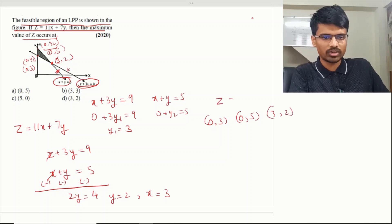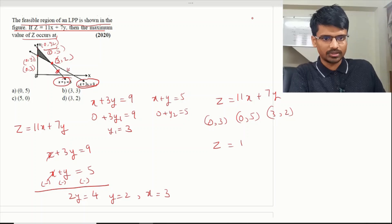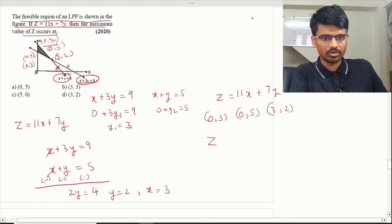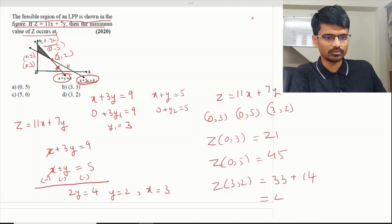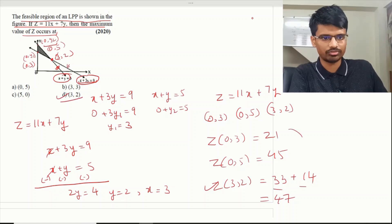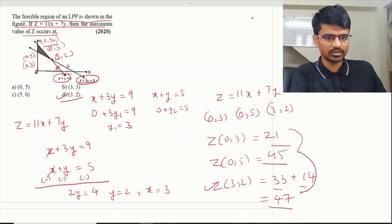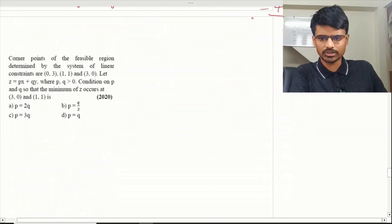Now evaluating z = 11x + 7y at each corner point. At (0, 3): z = 21. At (0, 5): z = 35. At (3, 2): z = 33 + 14 = 47. Comparing 21, 35, and 47 — the maximum value is 47, occurring at (3, 2).